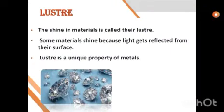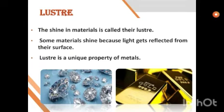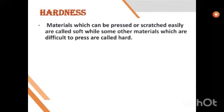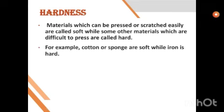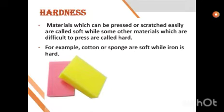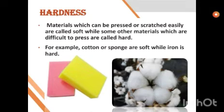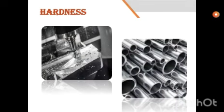Next is lustre — the shine in materials is called lustre. Some materials shine because light gets reflected from the surface, and lustre is the unique property of metals. The vessels in your house that your mama cleans shine very brightly — that is called lustre. Next, hardness: materials which can be pressed or scratched easily are called soft, while materials which are difficult to press are called hard. For example, cotton or a sponge you can press with your hand — it is soft. Whereas a metal pipe or an iron bar cannot be pressed with your hand — so they are called hard.